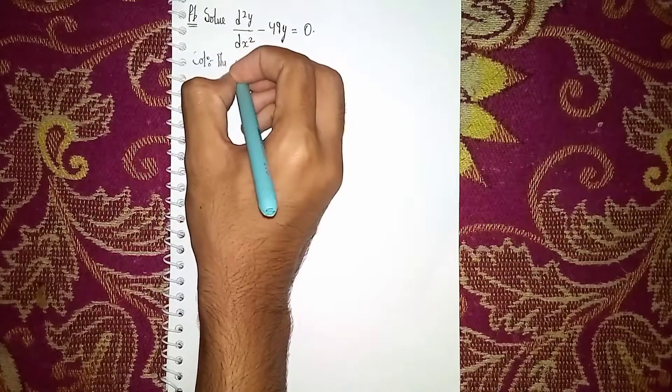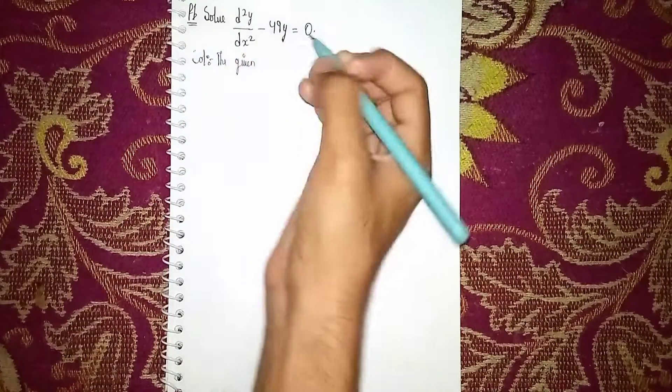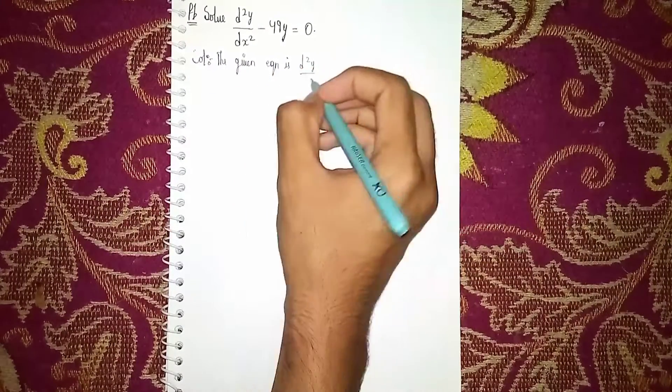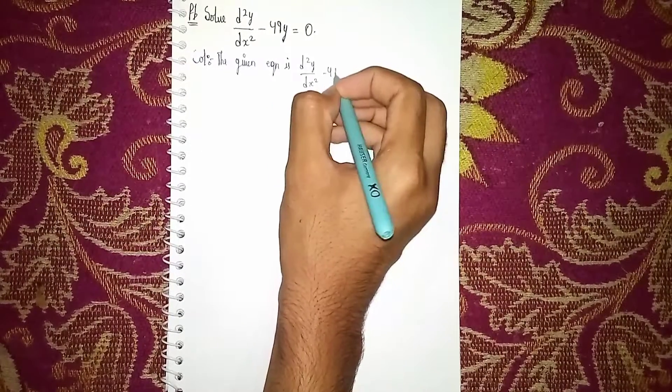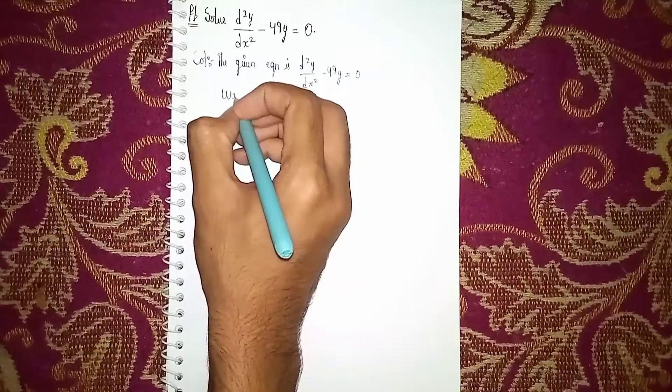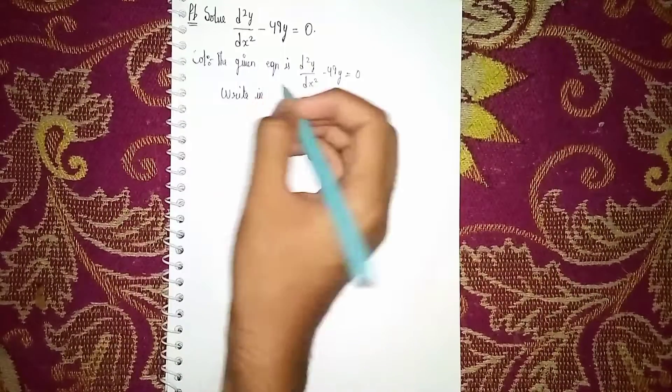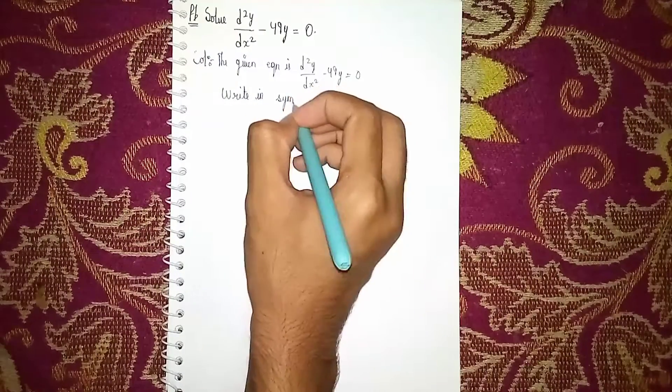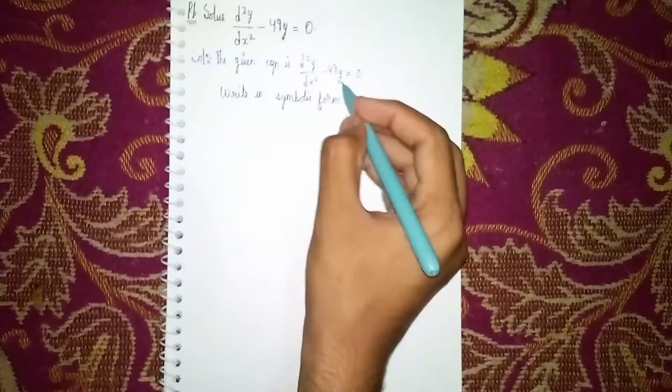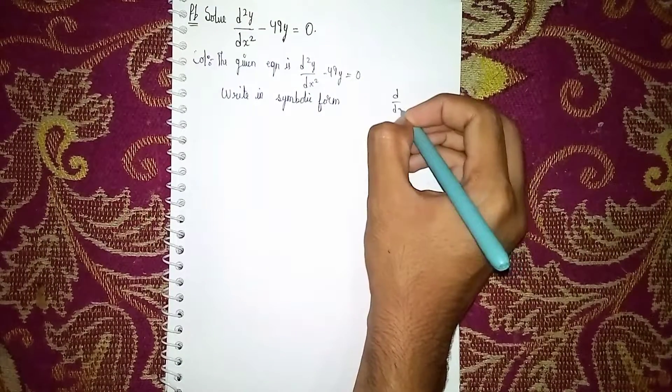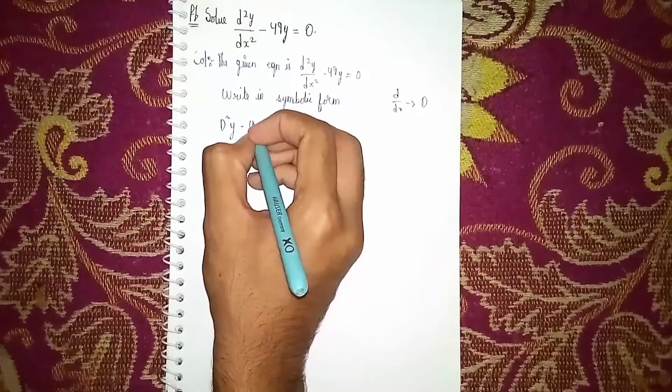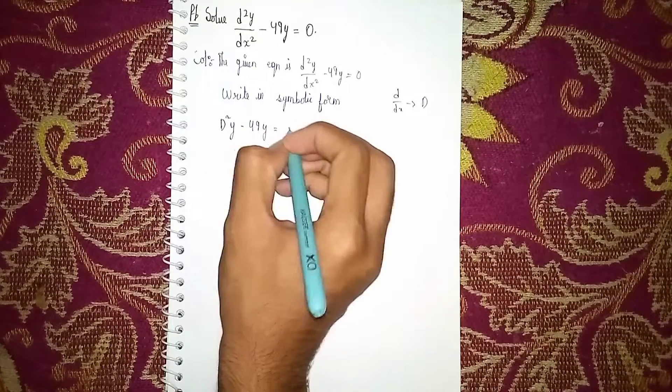The given equation is d²y/dx² - 49y = 0. Now write this equation in symbolic form. Symbolic form means whatever, instead of d/dx I write capital D. So it becomes D²y - 49y.